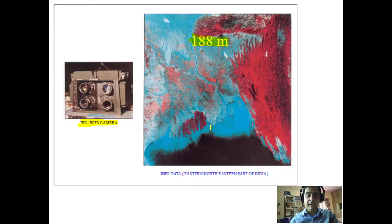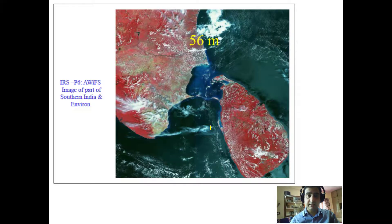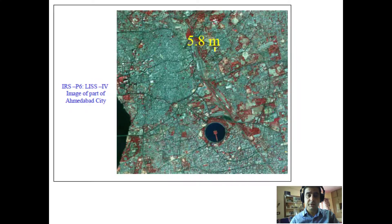And this is a very familiar picture of the Indian southern peninsula and the image is of a wide field sensor, 56 meter resolution. This is LISS 4 image of the Ahmedabad city and you can clearly see the resolution is quite high of the LISS 4 image. You can see the road network.